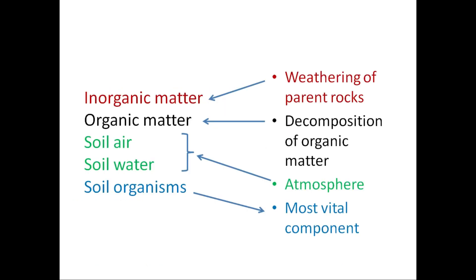Where do these five components come from? Inorganic matter comes from weathering of parent rocks. Organic matter comes from decomposition of organic matter. Soil air and soil water come from the atmosphere, and soil organisms, which are the most vital component of soil — we cannot imagine a soil which has no microorganism.